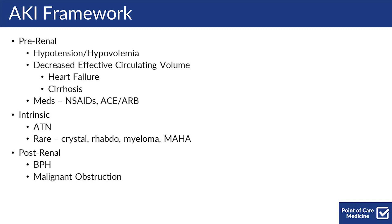Intrinsic causes of an AKI, including actual damage to the kidney, is acute tubular necrosis caused by many things, which we'll talk about later, and rarely can be caused by crystal nephropathy, rhabdomyolysis, myeloma, or MAHA. Post-renal etiologies are usually due to BPH and malignant obstruction further up in the ureters, but usually has to be bilateral.